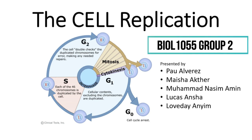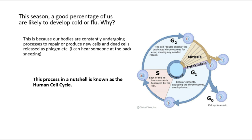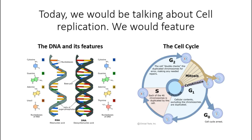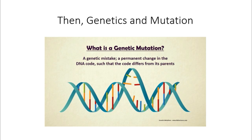Hello, welcome to the cell replication. A good percentage of us are likely to develop a cold or flu. This is because our bodies are constantly undergoing processes to repair or produce new cells. This process in a nutshell is known as the human cell cycle. Today we'll be talking about the DNA and its features, the cell cycle, mitosis, and a little bit of meiosis and then mutation.